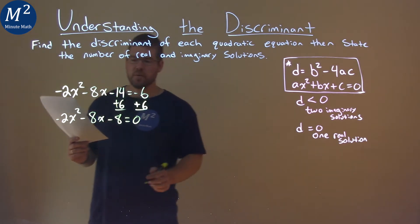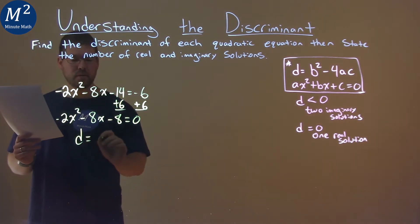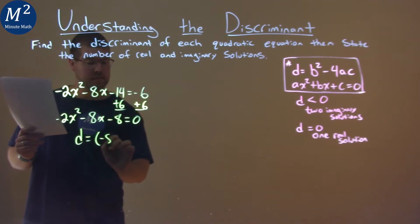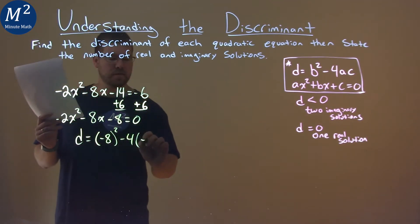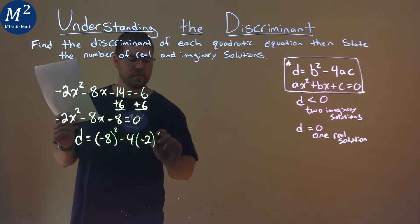Now I'm going to use my formula. Our discriminant is equal to our b value, which is negative 8 right here, squared minus 4 times a, which is negative 2, times c, which is negative 8.